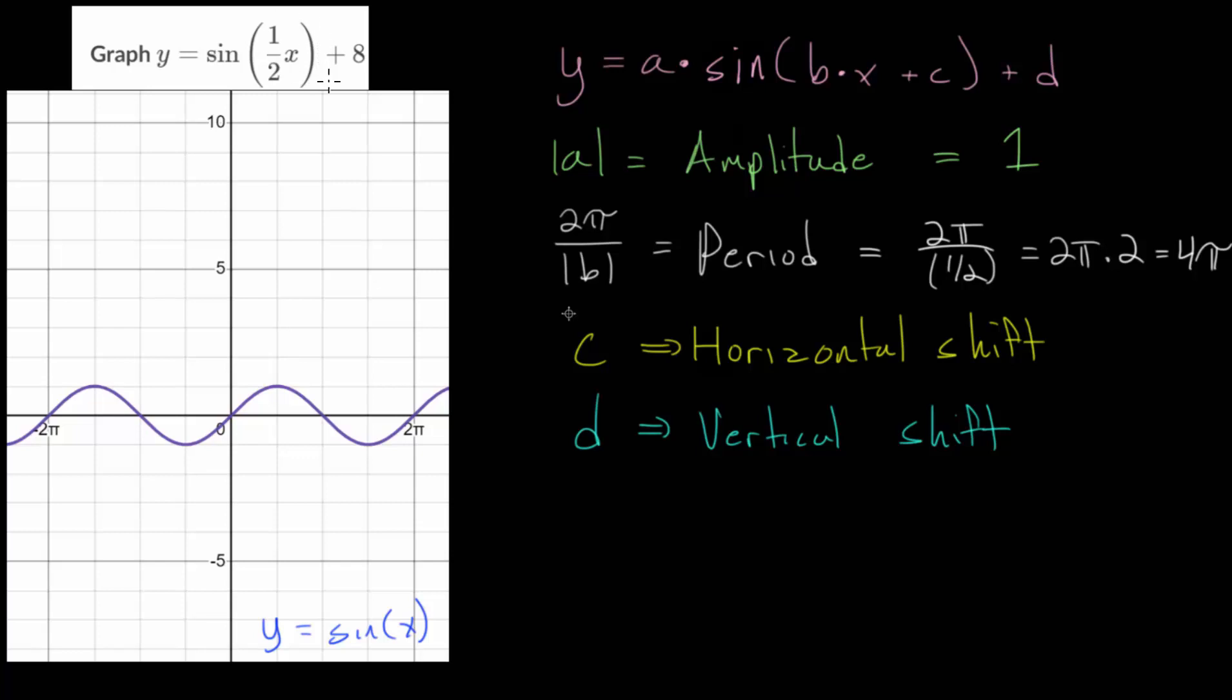And it doesn't look like we have any horizontal shifting here. So our c value is 0. And our vertical shifting, our d value, is 8. We are adding 8, meaning that the midline, or the equation for the midline, is now y equals 8.